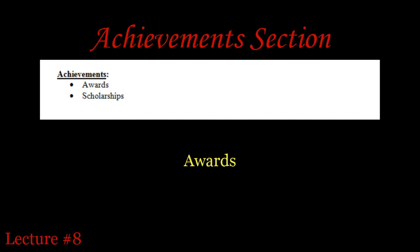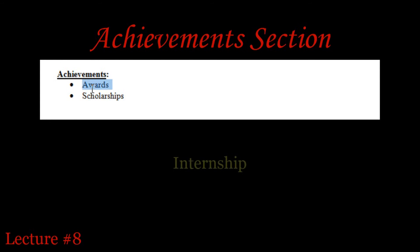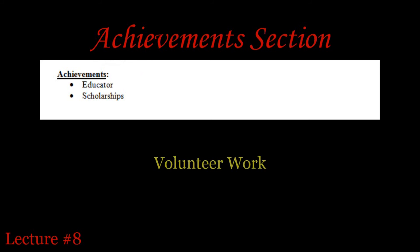The achievements section is optional. This section should list awards, scholarships, acknowledgements, etc. If you need more space for other sections, consider integrating your achievements into those other sections. When you use achievements as a separate section, it will attract more attention to specific accomplishments, and that's what you want your resume to do.